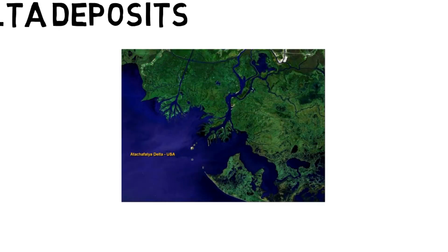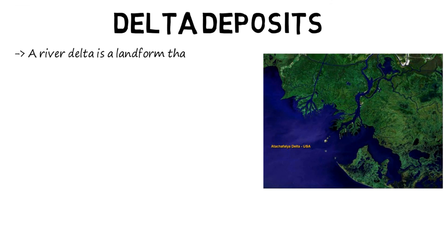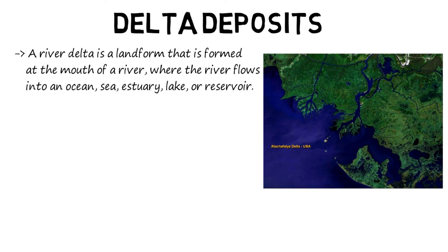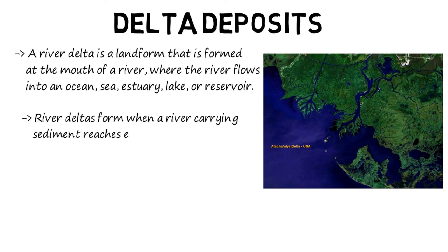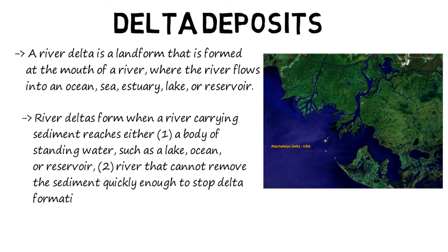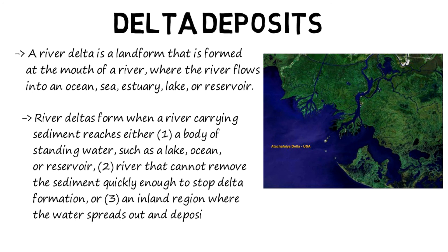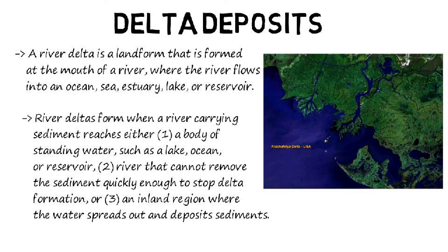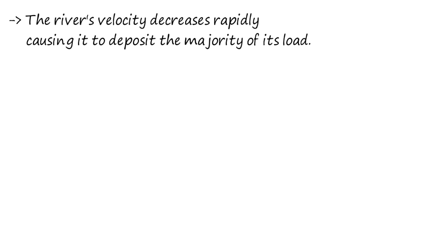Delta deposits. A river delta is a landform that is formed at the mouth of a river, where the river flows into an ocean, sea, estuary, lake, or reservoir. River deltas form when a river carrying sediment reaches either a body of standing water such as a lake, ocean, or reservoir, or a river that cannot remove the sediment quickly enough to stop delta formation, or an inland region where the water spreads out and deposits sediments. The river's velocity decreases rapidly, causing it to deposit the majority of its load.